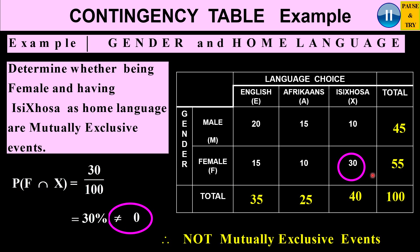If this value were 0, then we would have mutually exclusive events. Can you see other mutually exclusive events? Male and female are mutually exclusive because you can't be male and female at the same time. Also, English and Afrikaans are mutually exclusive — there's no overlap. There's no overlap between English and Isizulu either. But male and Afrikaans do overlap with 15, and females and Afrikaans overlap with 10. Male and female, however, don't overlap, so they are mutually exclusive events.